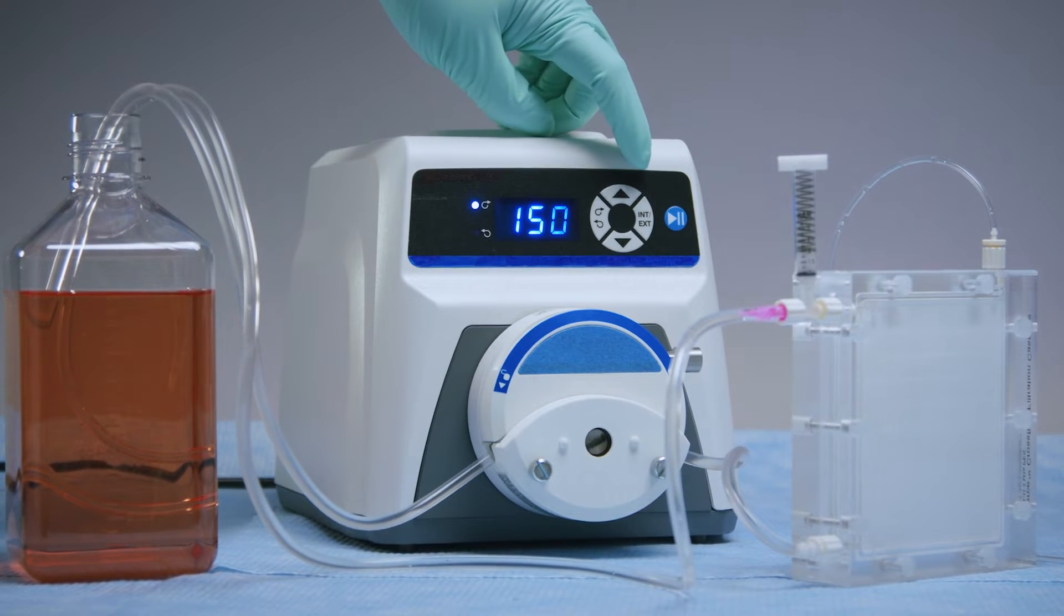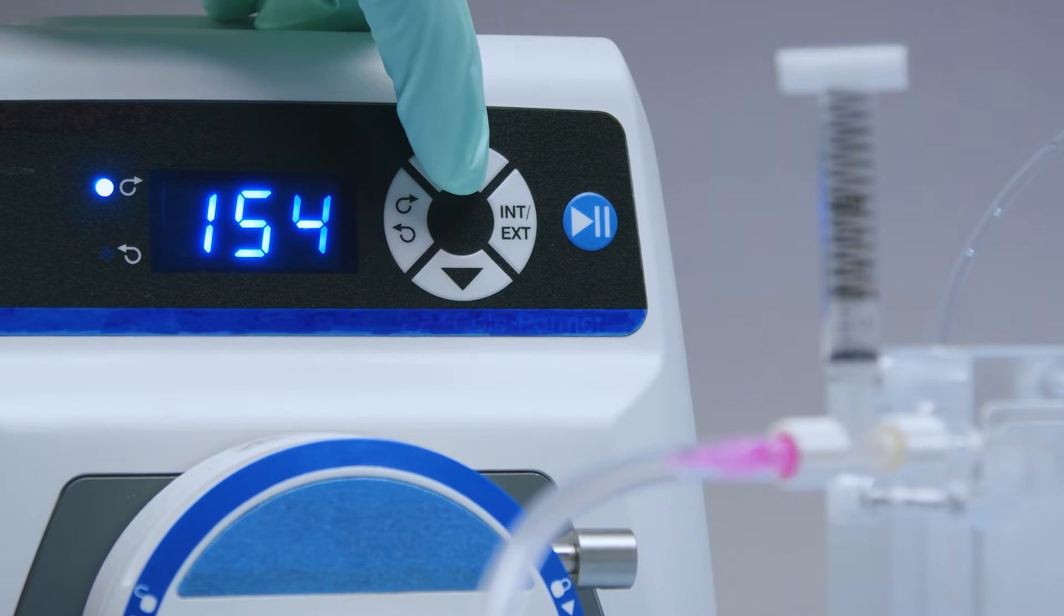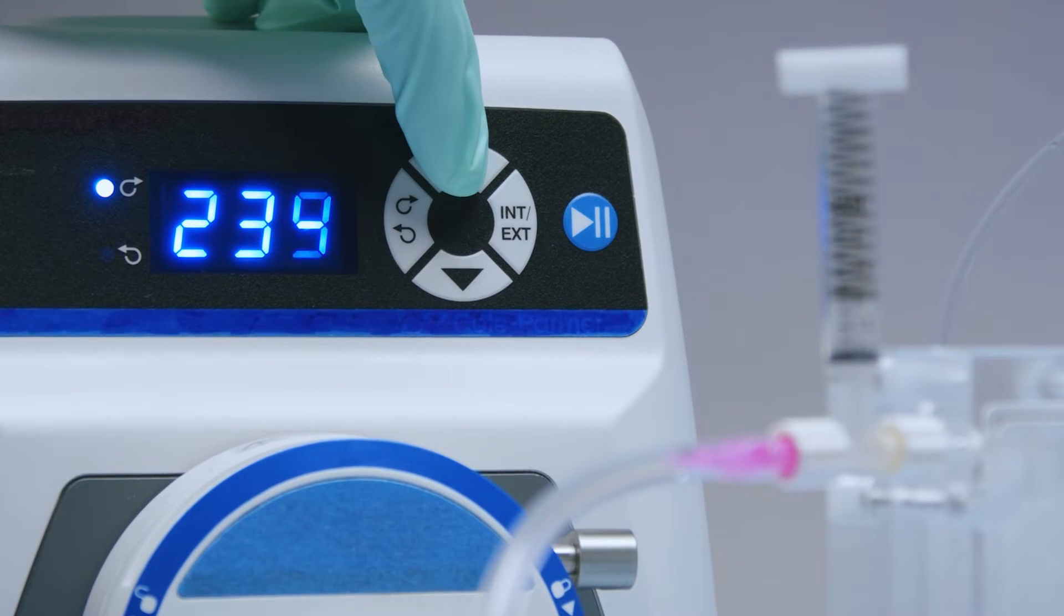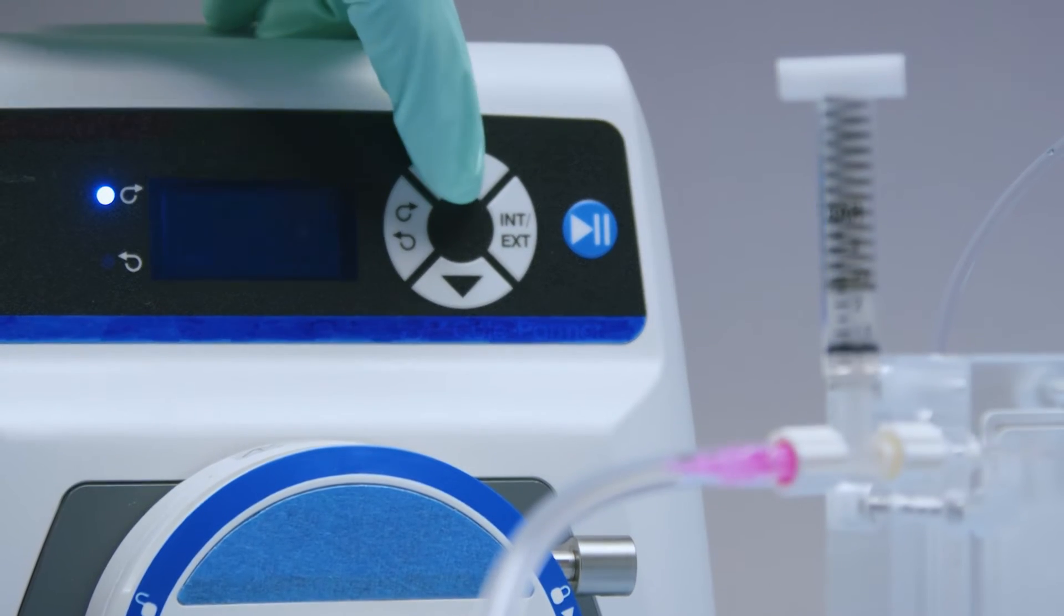Following assembly, turn on the pump and adjust the flow rate until the pressure gauge reads 1.5. In less than 5 minutes, you're ready to go.